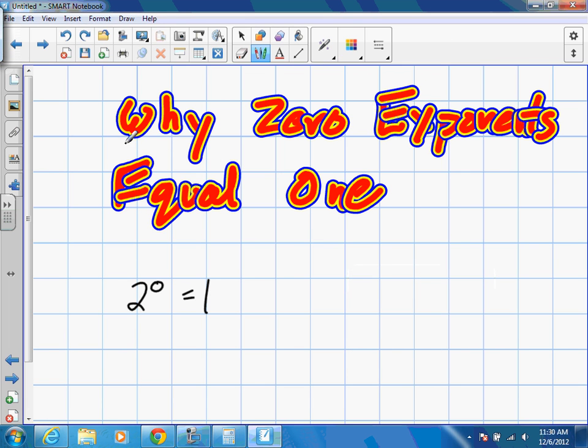Okay, so we're going to explain why zero exponent equals one, or in other words, we're going to prove how this would work.